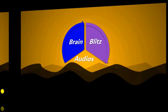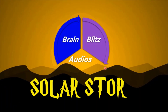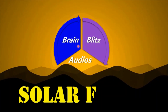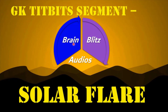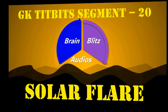Hello everyone! Welcome to Brain Flits Audios. Recently we've heard of a solar storm approaching the Earth. We have heard a lot of information online about solar flares, storms, etc. But how do we make sense of the information that we know? Today's video is just about that — we're going to be looking at what's happening in the sun when you hear terms such as solar flares and solar storms.